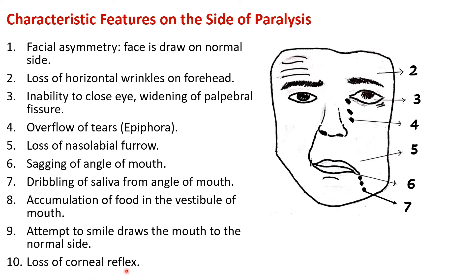There is also loss of corneal reflex. When the cornea is touched — by accident, dust, or strong wind — normally you blink and close your eyes. The sensory information from the cornea is carried by the ophthalmic division of the trigeminal nerve, and the efferent pathway is via the facial nerve, which supplies the muscles that close the eye. Since we have lost that efferent part, the eye cannot be closed and there is loss of corneal reflex. To summarize the lower signs: loss of nasolabial furrow, sagging of angle of mouth, dribbling of saliva, accumulation of food in the vestibule, mouth drawn to normal side on smiling, and loss of corneal reflex.